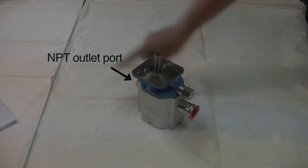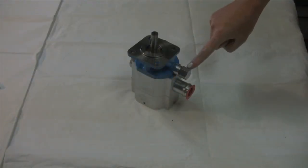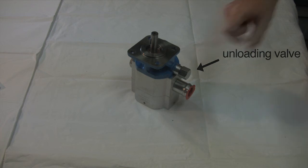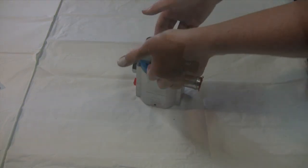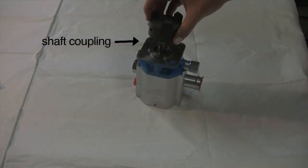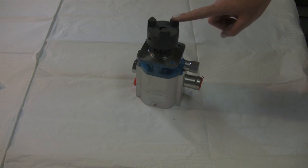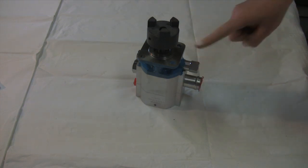The unloading valve is next to the inlet, but don't adjust without calling us first. Never remove the bolts on the opposite side. Careful when mounting the shaft coupling. Do not hammer too forcefully or it could damage the housing.